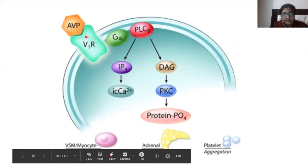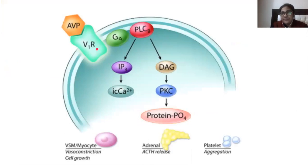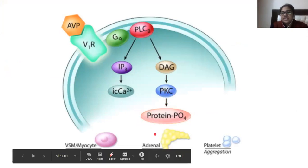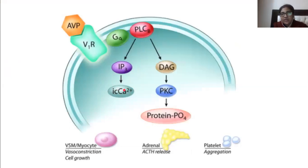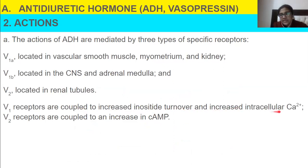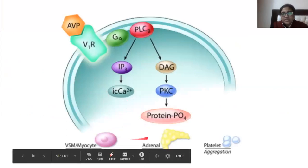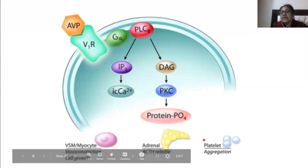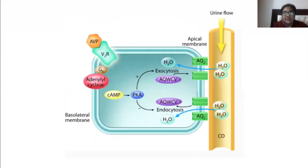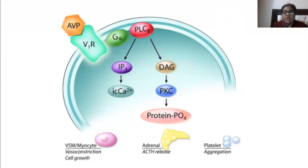The V1 receptor activates diacylglycerol, then protein kinase, resulting in protein phosphorylation. It also increases intracellular calcium. V1 is found in myocytes, adrenal gland, and is involved in platelet aggregation. This is important because a drug affecting V1 will enhance platelet aggregation and enhance ACTH release, along with the vasoconstriction action of vasopressin.